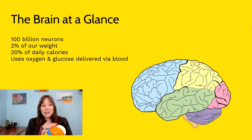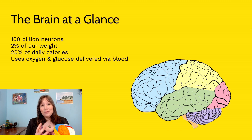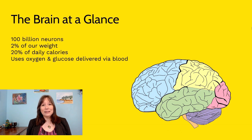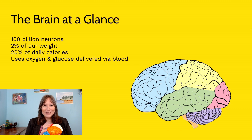On average, the brain represents about 2% of our body weight but uses about 20% of our daily calories. That's because the brain is a huge hog for oxygen and glucose — it's constantly using our sugar systems.